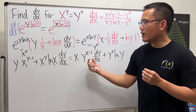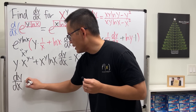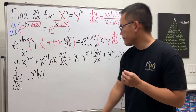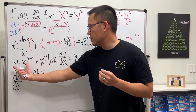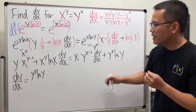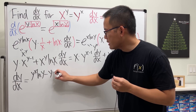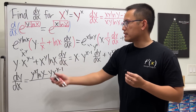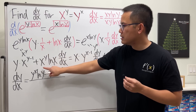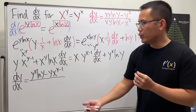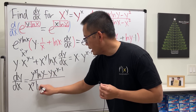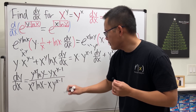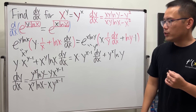Now we move terms and factor out dy/dx. Keep y to the x ln y on the right hand side. The term without dy/dx moves to the other side, becoming minus y times x to the y minus 1. Factor out dy/dx: on the left we have x to the y ln x minus x, and on the bottom we have y times x to the y to the x minus 1. That is the answer you get with this approach.